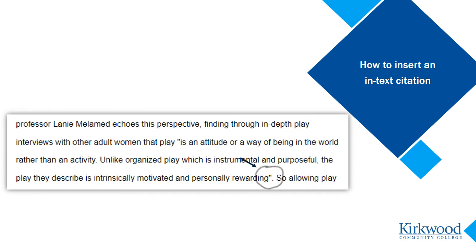Now click in the place in your paper where you want to add an in-text citation. This is usually at the end of the sentence in which you've included a paraphrase or summary from your source, or for direct quotations it's at the end of the quote. In this example I'll be aiming right here, after the quotation mark and before the period.